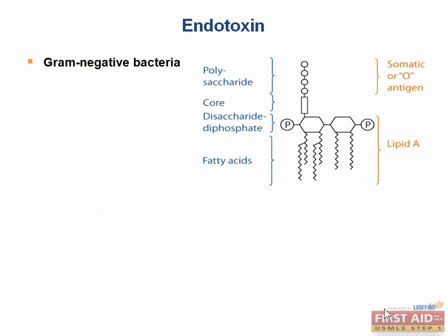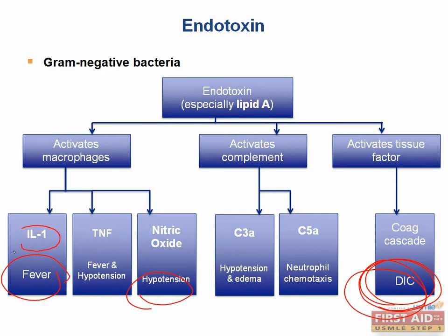The LPS endotoxin consists of a polysaccharide chain and a lipid moiety, usually lipid A. Lipid A can activate release of IL-1, causing fever, and TNF-alpha, causing fever and hypotension, as well as nitric oxide, which causes the hypotension seen in septic shock. This hypotension is due to massive vasodilation caused by these inflammatory mediators.